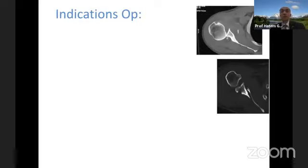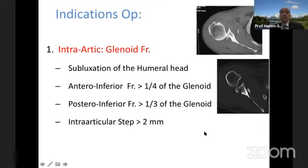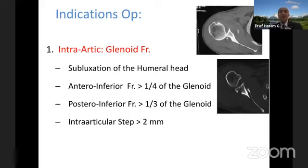The most important thing is learning the indications of surgery for scapular fractures. For intra-articular fractures, if we see subluxation of the humeral head, that's an indication. Inferior or posterior fractures involving one-third to one-fourth of the articular surface cause instability and need fixing. Any intra-articular step used to be a 4-5mm indication, but as with most joints, we do not accept more than 2mm displacement. A step will cause friction and osteoarthritis later on.